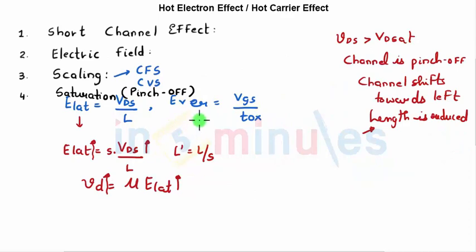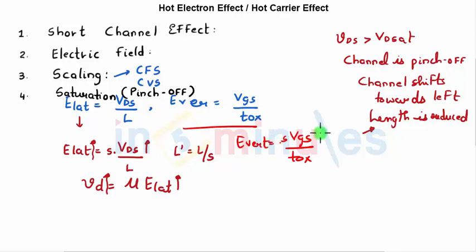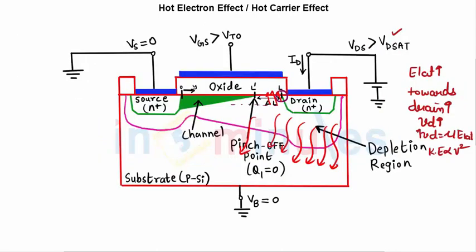Meanwhile, the electrons move toward the oxide layer. There is also the vertical electric field E_vertical = VGS / T_OX. If VGS is not scaled down but T_OX is scaled — T_OX_dash = T_OX / S — then E_vertical is also increasing, and it will try to pull the electrons toward the gate.